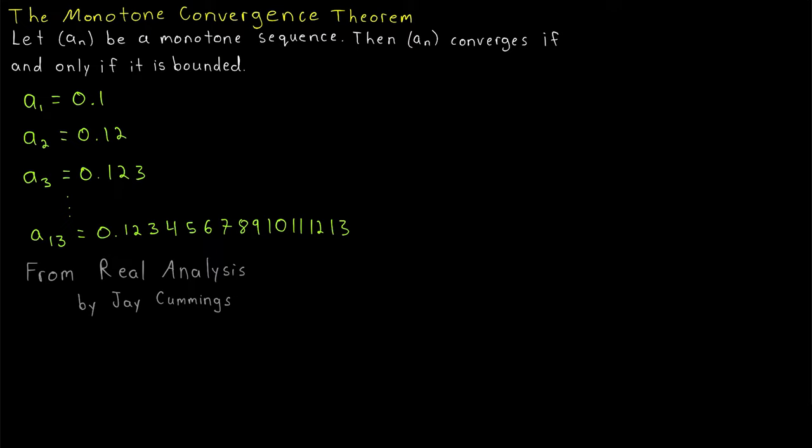So check this out: consider this weird sequence defined like this. a_1 equals 0.1, a_2 equals 0.12, a_3 equals 0.123, and this pattern continues, appending the digits of the position to each subsequent term in the sequence. So for example, with a two-digit position, a_13 equals 0.12345678910111213. So one way to think of this sequence is that each term a_n just consists of 0 point and then the digits of all the numbers from 1 to n.